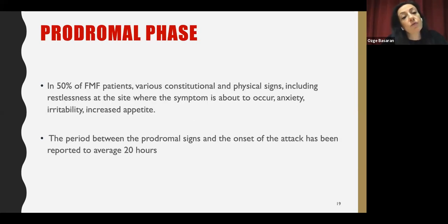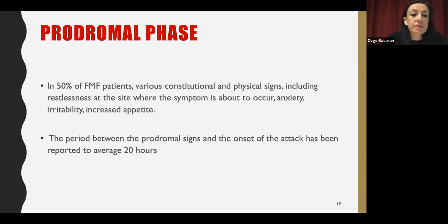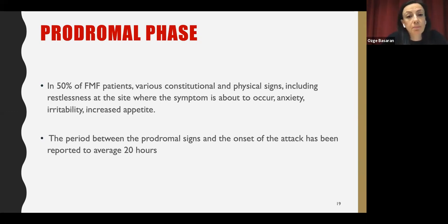The frequency of attacks can be variable, varying not only among patients but also among episodes of the same individual. There can be triggers for the start of attacks, such as menses, stress, or infections. In nearly half of FMF patients, there can be constitutional or physical prodromal signs before the attack — usually anxiety, irritability, or sometimes increased appetite. The prodromal period averages nearly 20 hours to one day before onset of the attack.